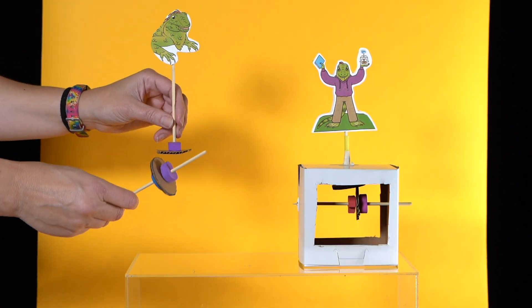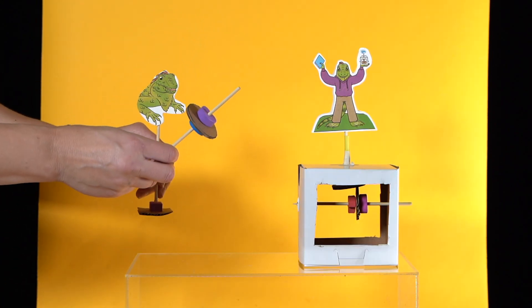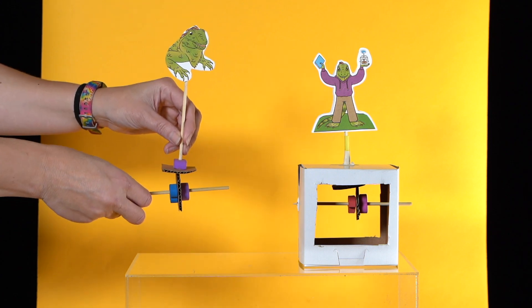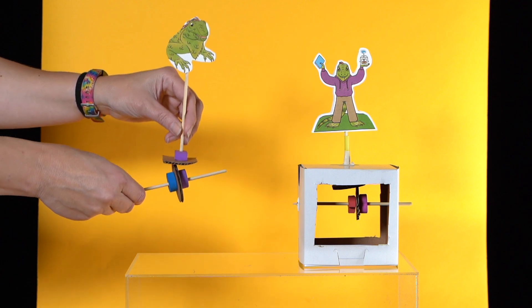These are the main parts. This part is the cam. It rotates when I turn the axle. The cam follower touches the top of the cam. It moves as the cam moves.